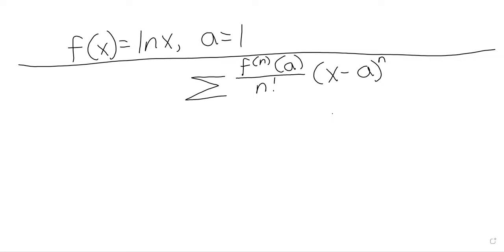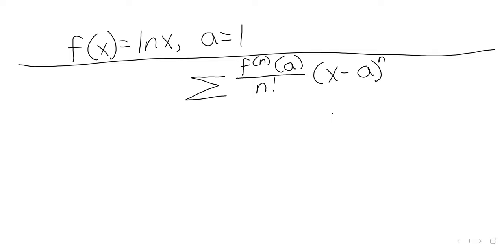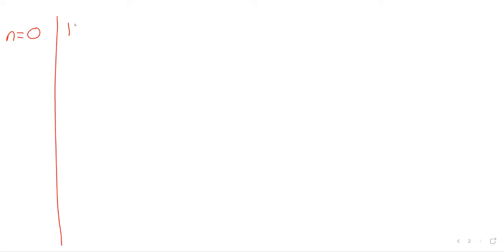We were cramped and rushed finding the Taylor series yesterday, so let's not be so rushed today. There's no rush — we won't do the next section until next week. This is an important enough section that I don't feel bad spending three days on it. Let's take this piece by piece. n starts at zero; we need the zeroth derivative, which is just the original function. Then we stick the center in — here the center is one.